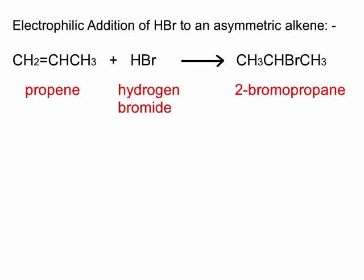Electrophilic addition of hydrogen bromide to an asymmetric alkene, in this case propene. You'll see in a moment why it's said to be asymmetric. It reacts with HBr to form either 1-bromopropane or 2-bromopropane, as you will see.